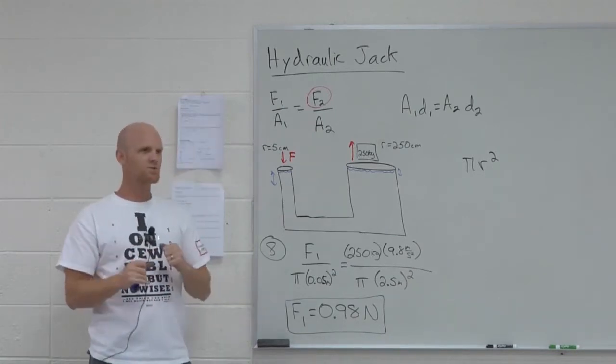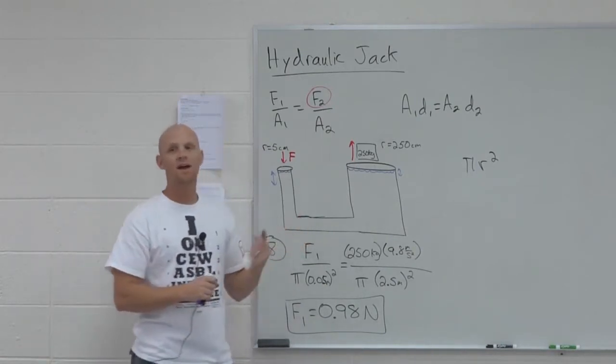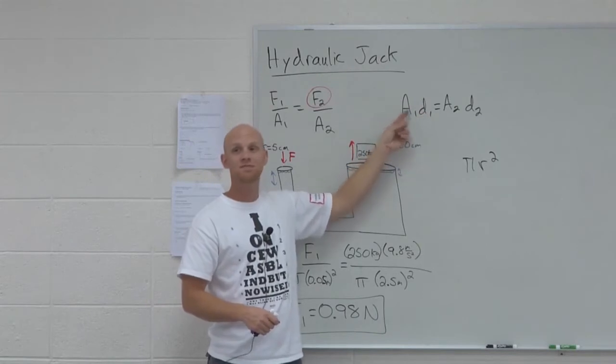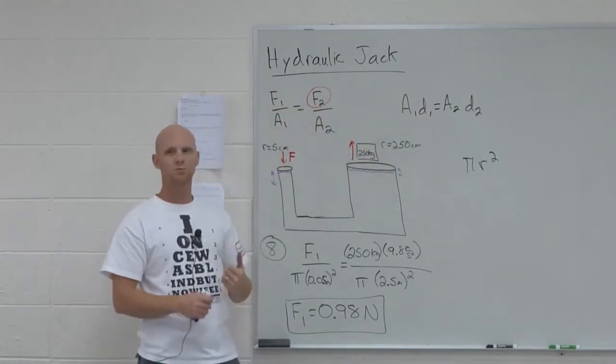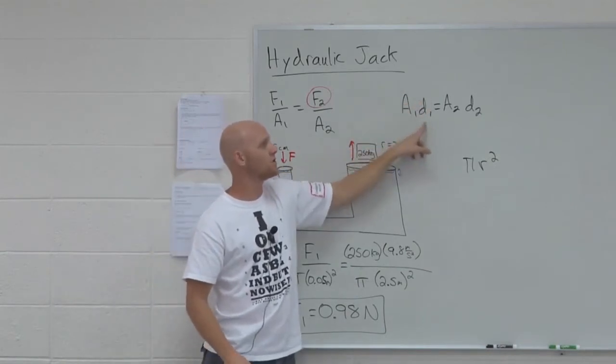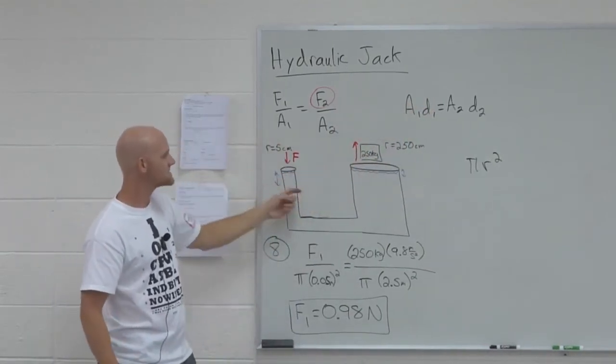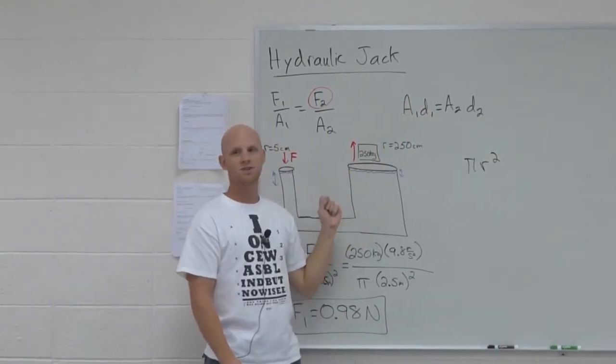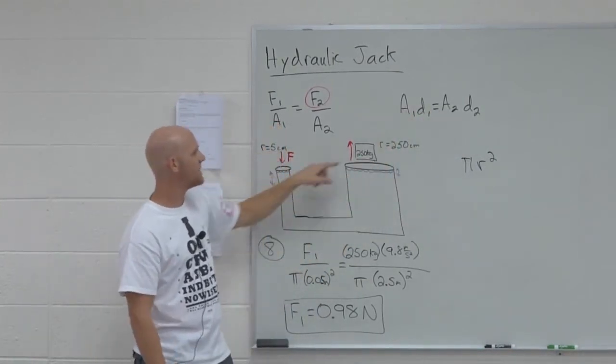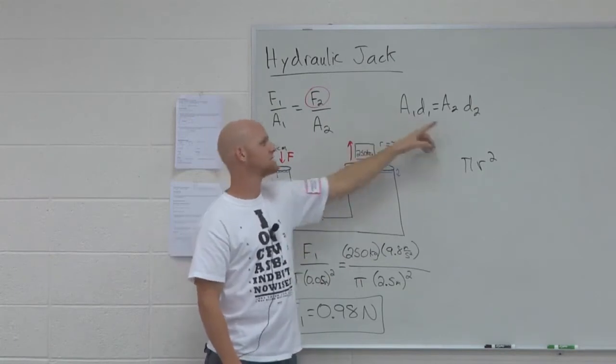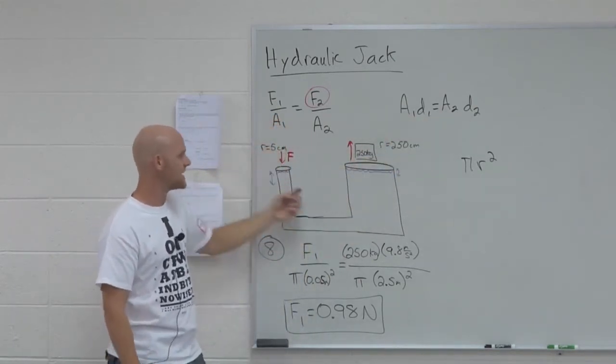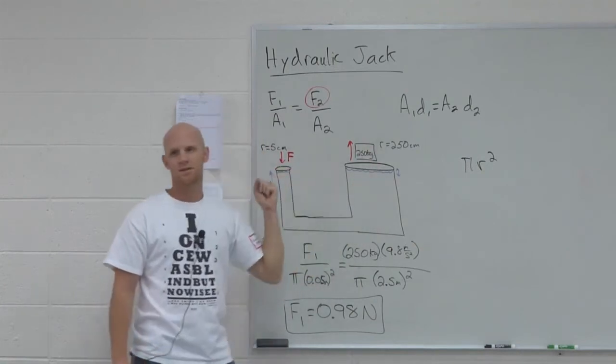It's pi r squared times h. But the key is, it's area times height. Or in this case, I'm going to call it area times the depth at which you're pushing it down. And so since area times depth, that's volume. The volume change on this side equals the volume change on this side. And that's why these are going to be equal. How far I push down is d1. How far the other side rises up would be d2. These have to be equal. The volume it decreases on this side has to be the same as the volume increase on this side.